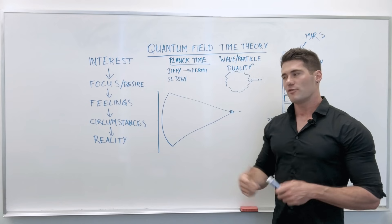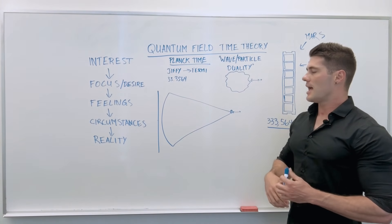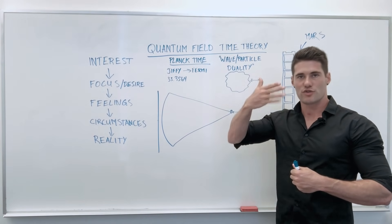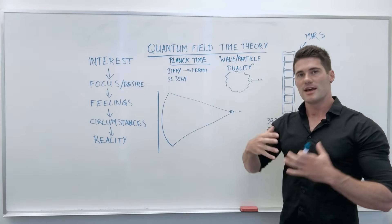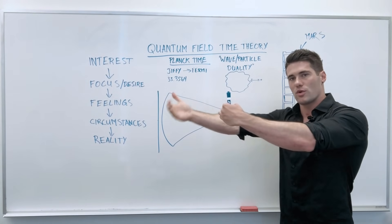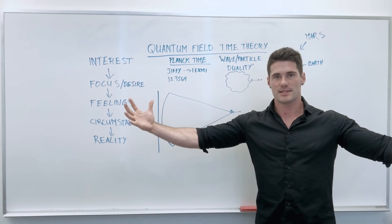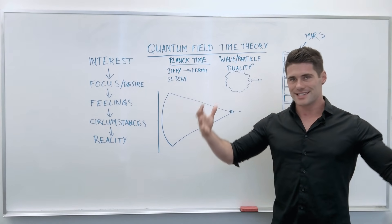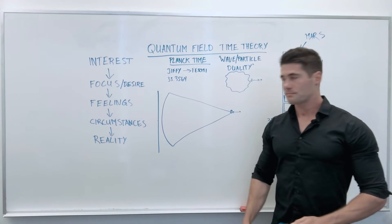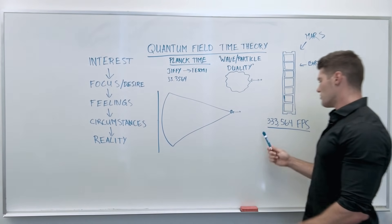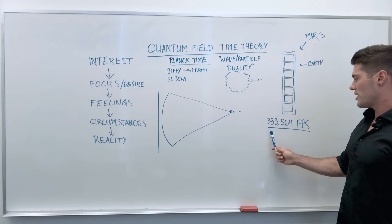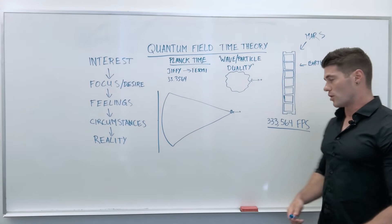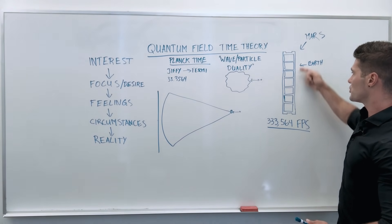When we do the math, if we say that every single jiffy is a different frame on the movie strip of your life, a different configuration of energy that consciousness puts together in a sequential order to give you the illusion that you're experiencing this life right now. But really all possible realities, configurations of energy, are existing simultaneously in the field. If we look at a jiffy as a frame, there are 333,564 jiffys per second, or frames per second.